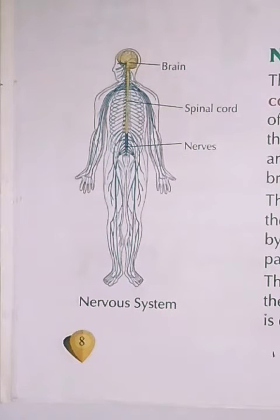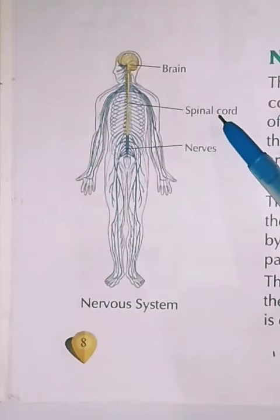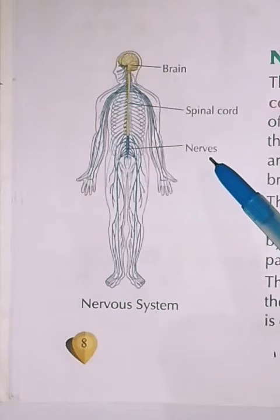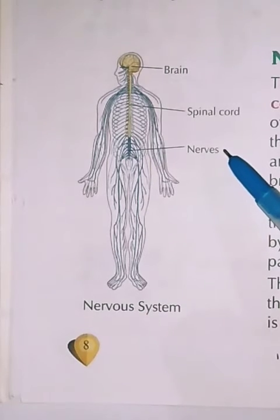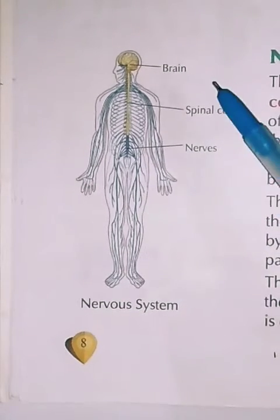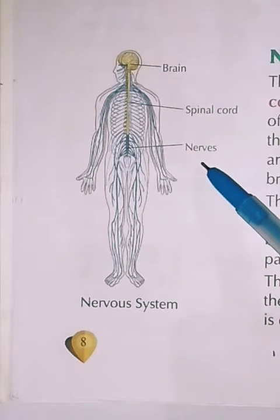Good morning students. Today I am going to start our next topic: the nervous system. The nervous system is a part of our body. It consists of the brain, spinal cord, and nerves. These are the three main parts we are going to study today.